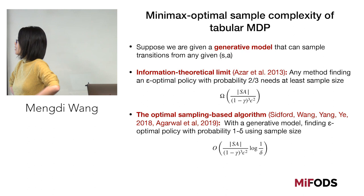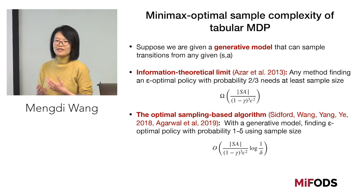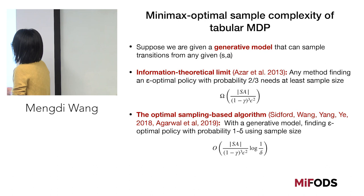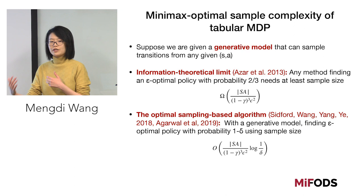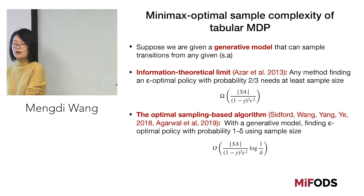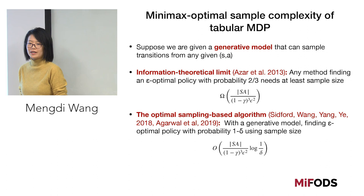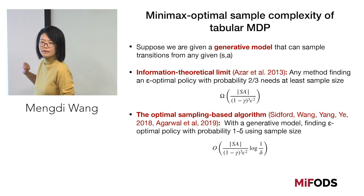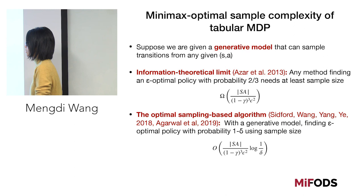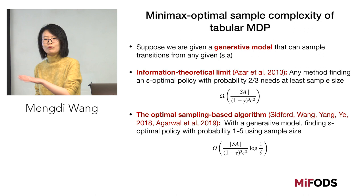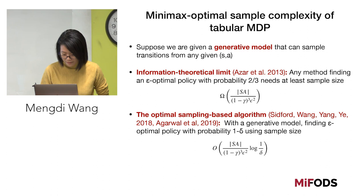For this very basic problem, we're happy to announce that the statistical sample complexity is solved. Working with a generative model, there is a paper by folks at DeepMind that proved an information-theoretic lower bound: any algorithm interacting with a generative model cannot find a good optimal policy with reasonable probability using fewer than a certain number of samples. By putting together a bunch of techniques, we can achieve algorithms that match this lower bound. So at the very least, we know the right answer for this basic problem.